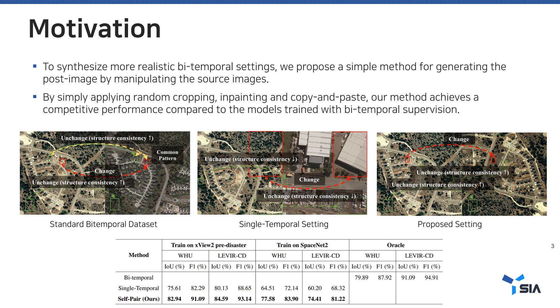To synthesize more realistic bi-temporal settings, we propose a simple method for generating post-images by manipulating source images. By applying random cropping, inpainting, and copy-paste, our method achieves competitive performance compared to models trained with bi-temporal supervision.